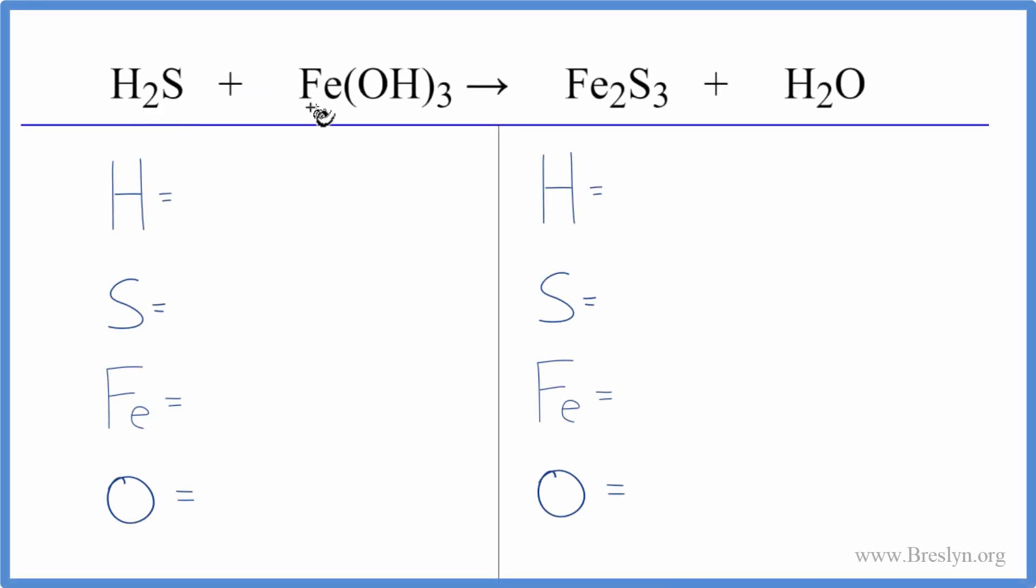In this equation, we have H2S plus Fe(OH)3. So let's count the atoms up on each side of the equation and balance it.